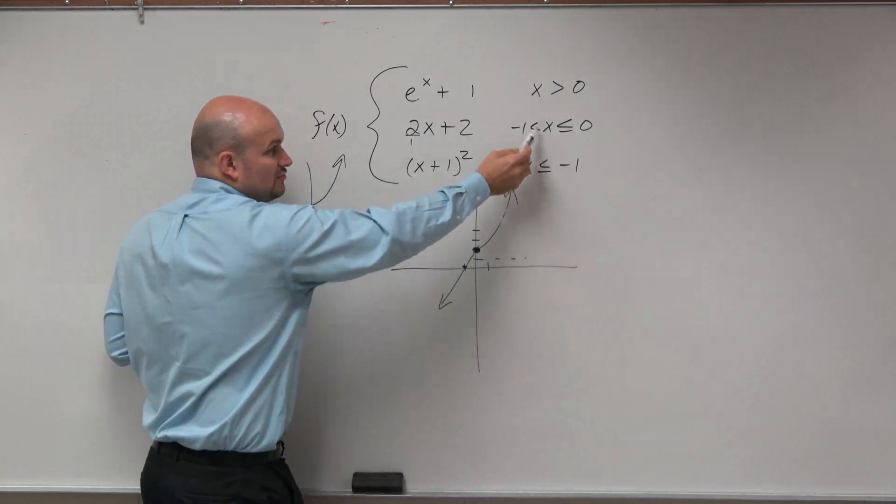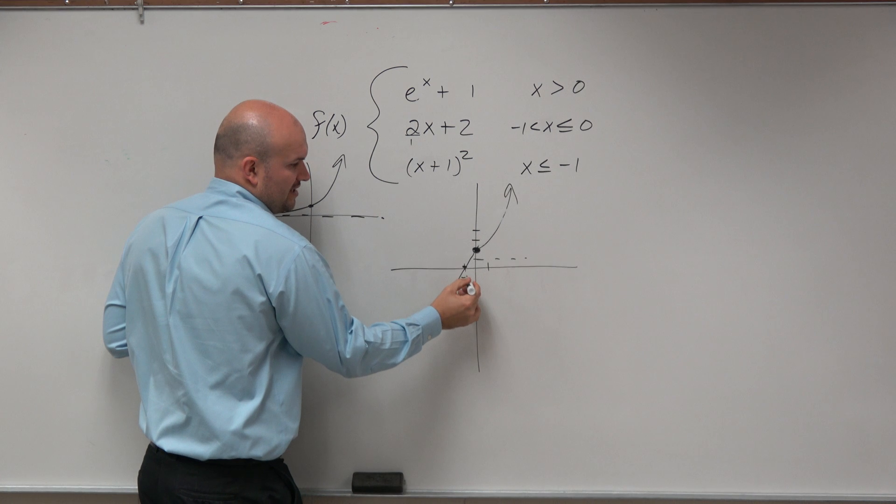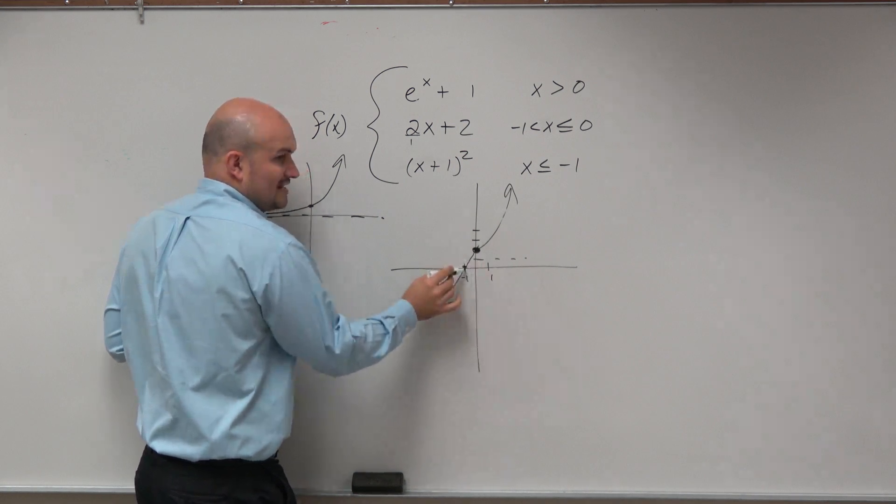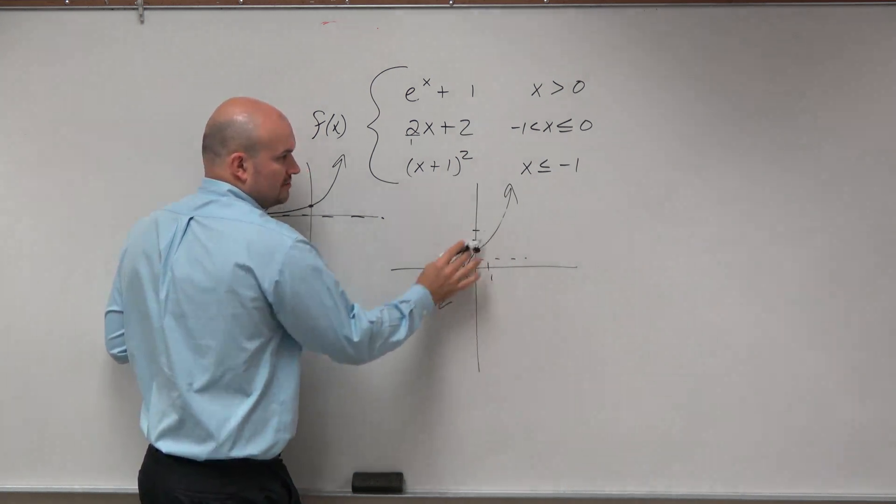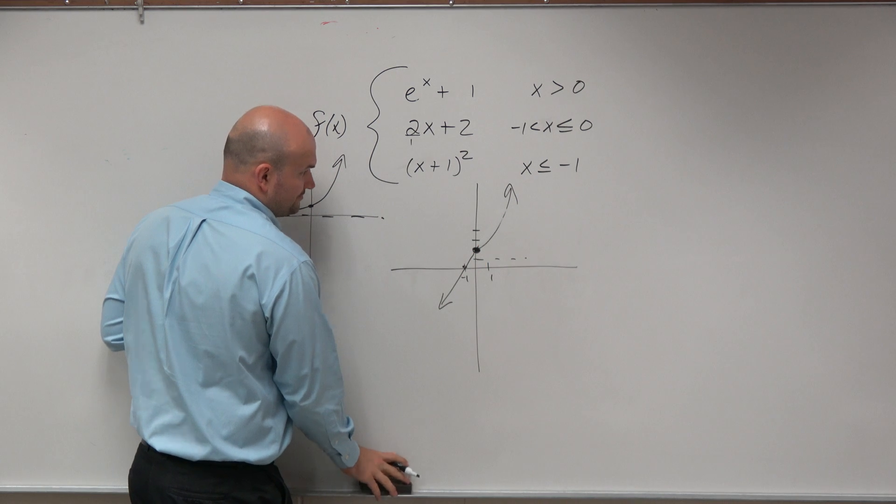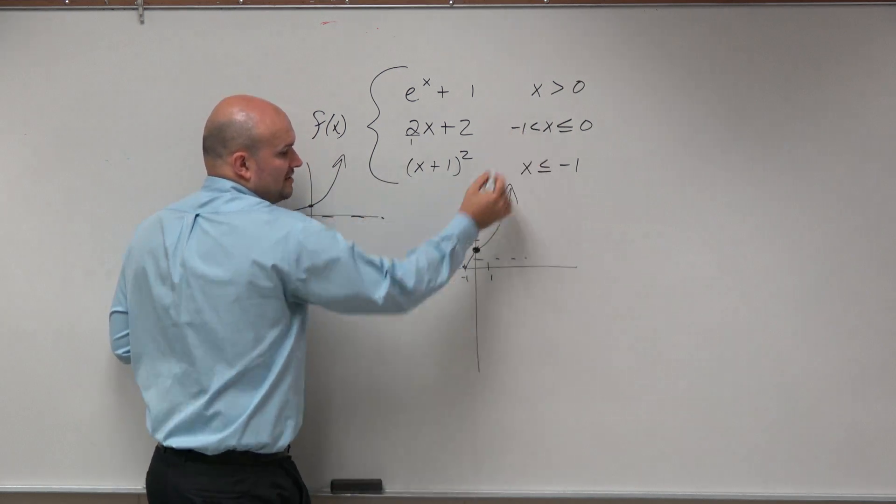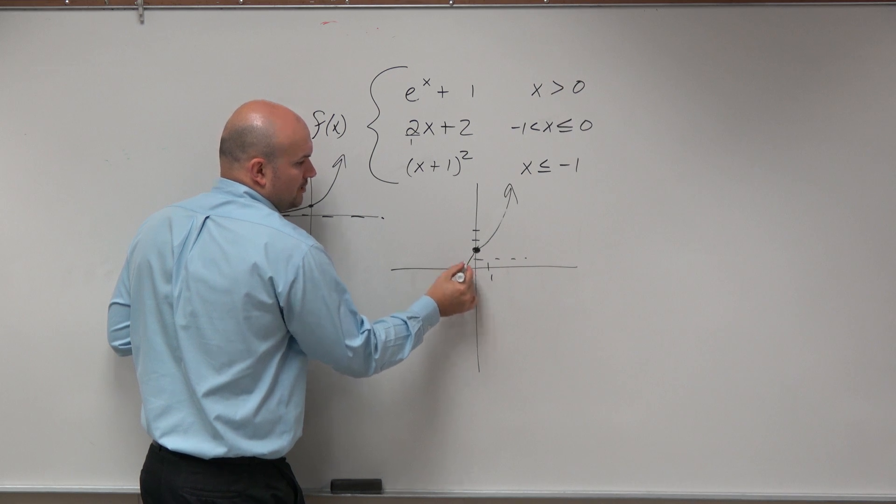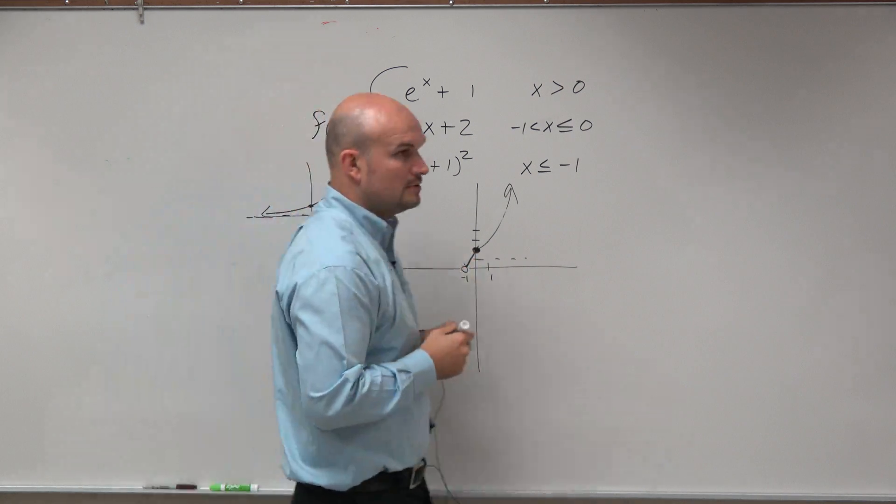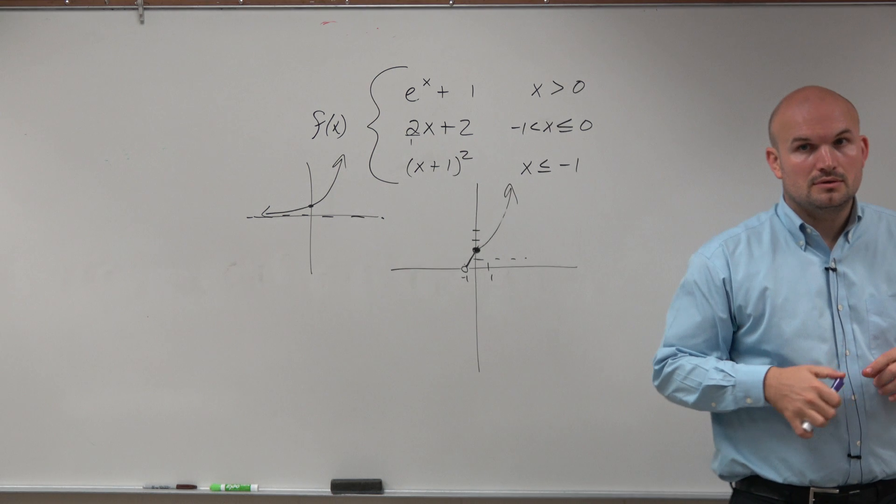And then it says x has to be greater than negative 1. Well, here's negative 1, here's positive 1. So x is greater than negative 1 only from moving to that portion. So therefore, all of that gets done, but it says x is greater than negative 1, so that's a hole.